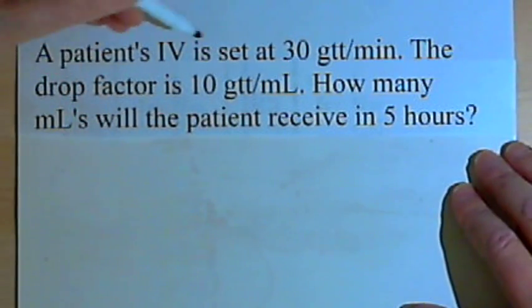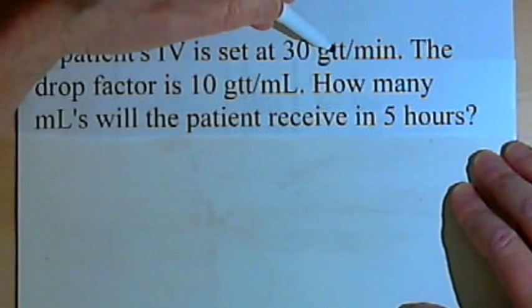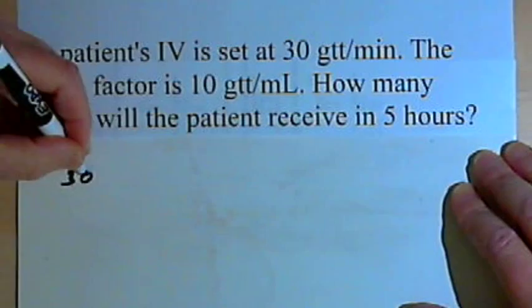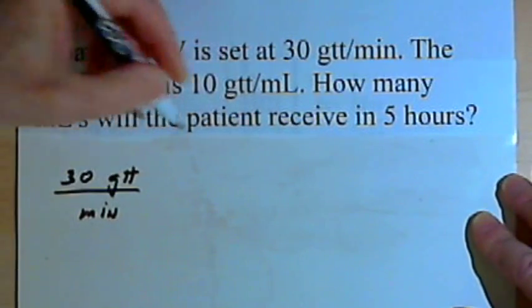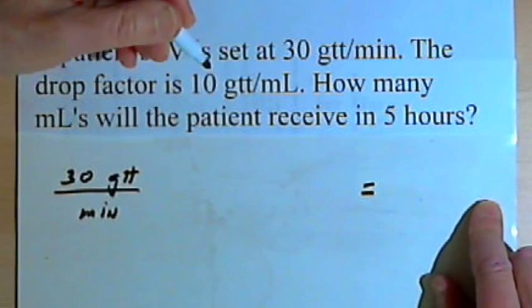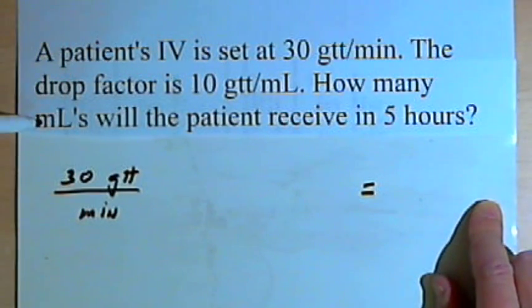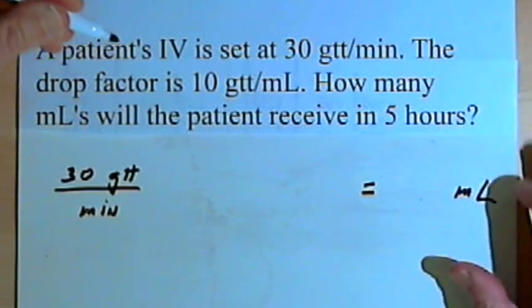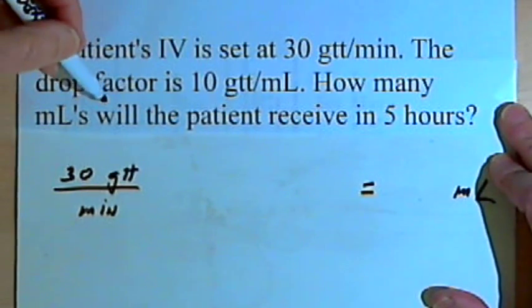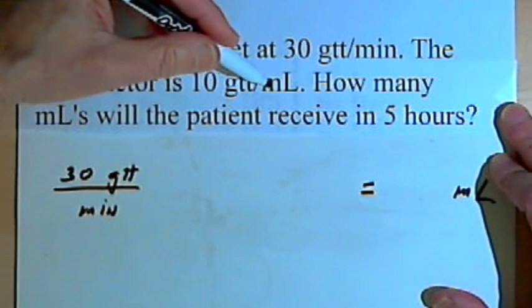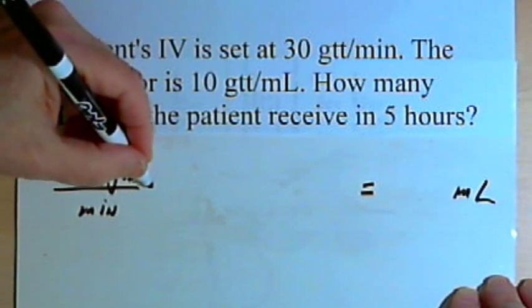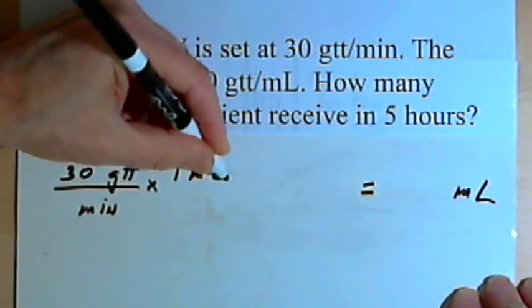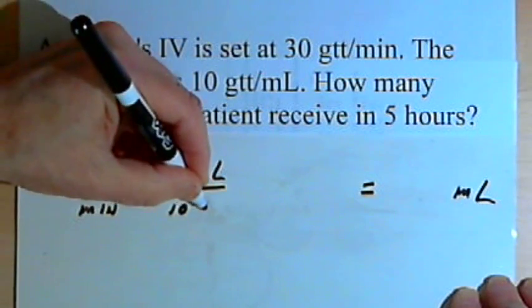Let's set up our equation. We'll start out with the drip rate — that's 30 gtt over minutes. I'll add an equal sign, and way over on the right write down the unit we want to end up with: milliliters. The other information we have is that the drop factor is 10 drops per milliliter. Since I want to end up with milliliters in my answer, I'll write the second fraction as 1 milliliter over 10 gtt.